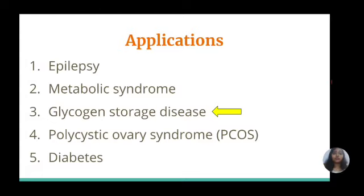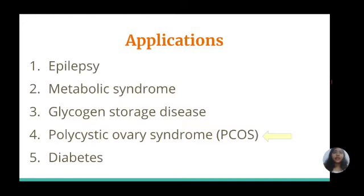People with glycogen storage disease, or GSD, lack one of the enzymes involved in storing glucose as glycogen or breaking down glycogen into glucose. Typically this disease is diagnosed in childhood. Symptoms vary depending on the type of GSD and may include poor growth, fatigue, low blood sugar, and an enlarged liver. People with certain types of GSD may experience dramatic improvement in symptoms while following a ketogenic diet, though more research is still needed.